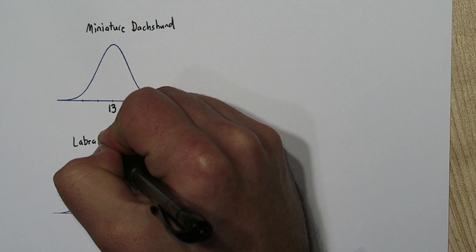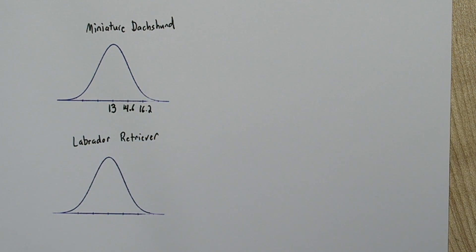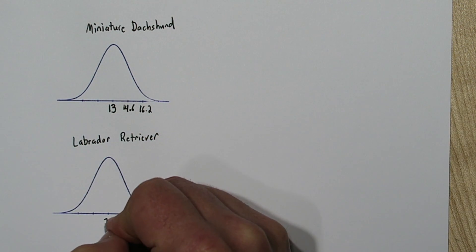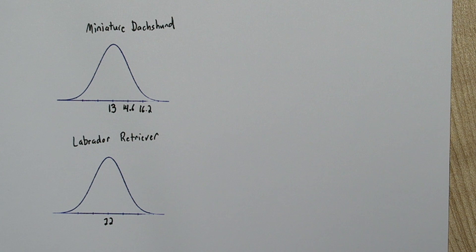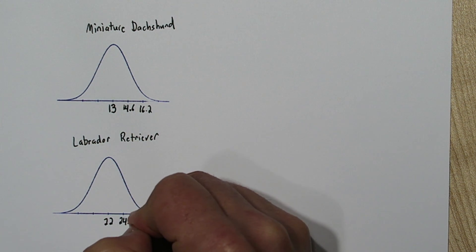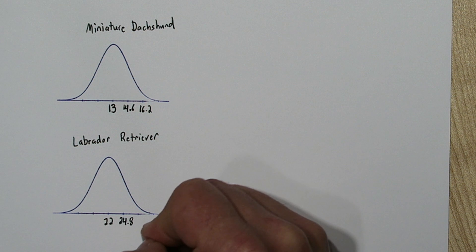Let's look at the Labrador Retriever. Its mean is 22, and a standard deviation is 2.8, so this is 24.8, and right here is 27.6.